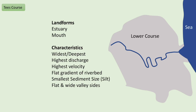To sum up the lower course characteristics: there is an estuary and a mouth; it's the widest and deepest section; it has the highest discharge and highest velocity; the gradient of the riverbed is very flat; constant erosion has reduced all sediment to a very small size; and the valley sides next to the river are very flat. Sometimes that can lead to flood plains and even the formation of levees in other rivers, but not so much here on the River Tees.